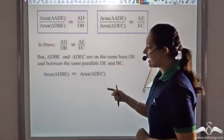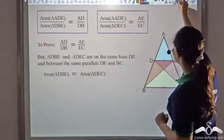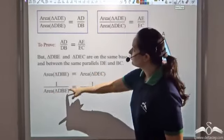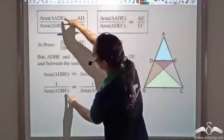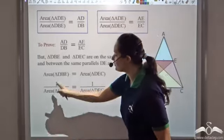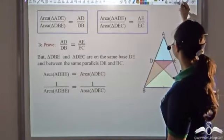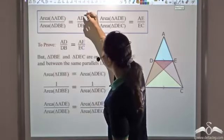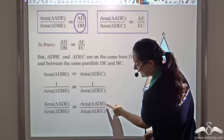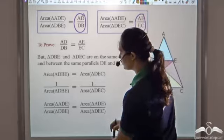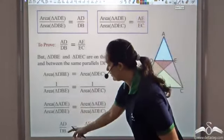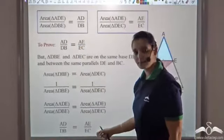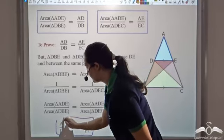Since area of DBE equals area of DEC, their reciprocals are also equal. Multiplying both sides by area of triangle ADE, the equality still holds. Now, area of ADE by DBE equals AD by DB, and area of ADE by DEC equals AE by EC. Substituting, we get AD by DB equals AE by EC. Hence the theorem is proved.